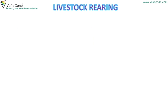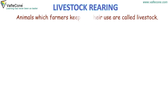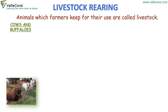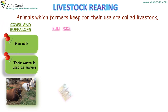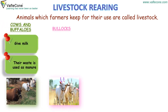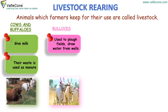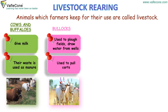Livestock rearing: animals which farmers keep for their use are called livestock. For example, cows and buffaloes — they give milk and their waste is used as manure. Bullocks are used to plow fields, draw water from wells and pull carts.